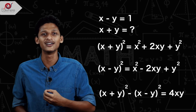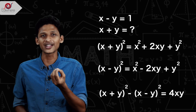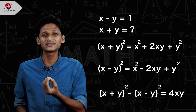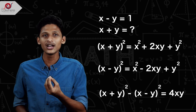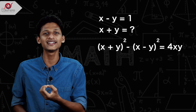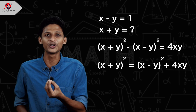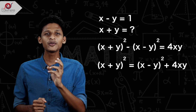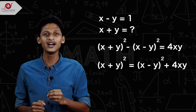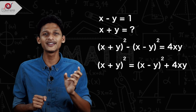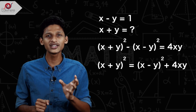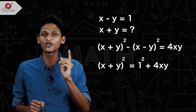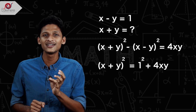x plus y all square minus x minus y all square — here we go. x plus y all square minus x minus y all square equals 4xy. Now we go to this identity: x plus y all square equals x minus y all square plus 4xy. Now we go to this relation — we use the x minus y value and xy value in this identity. x plus y all square equals x minus y all square plus 4xy, which is 1 squared plus 4xy.